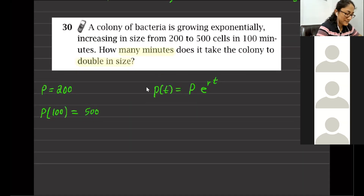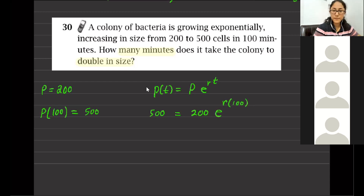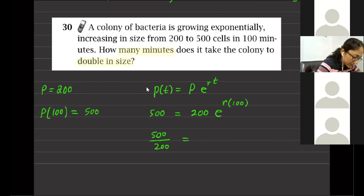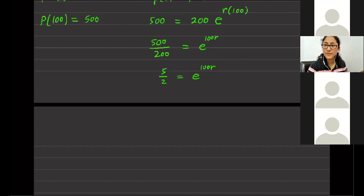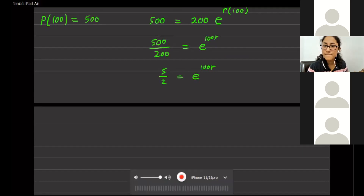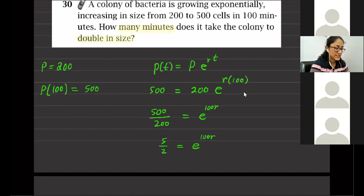Plugging in: 500 equals 200 e to the 100R. Dividing both sides by 200: 500 over 200 equals e to the 100R, which gives 5 over 2 equals e to the power 100R. Student: What's the difference between R and T? R is the rate, T is the time, and P is the initial amount; P of T is the amount at any time T.